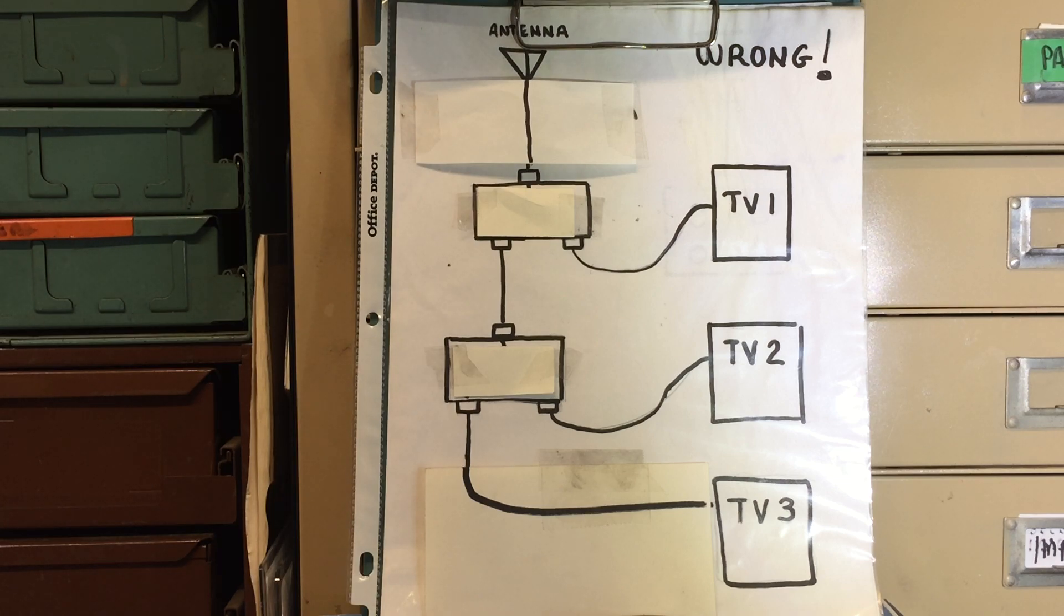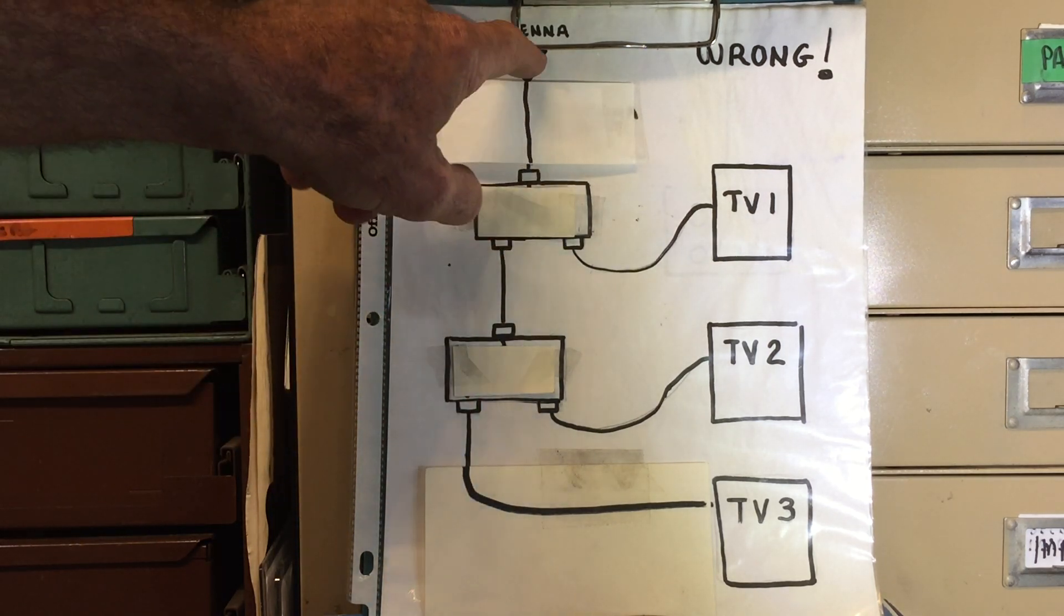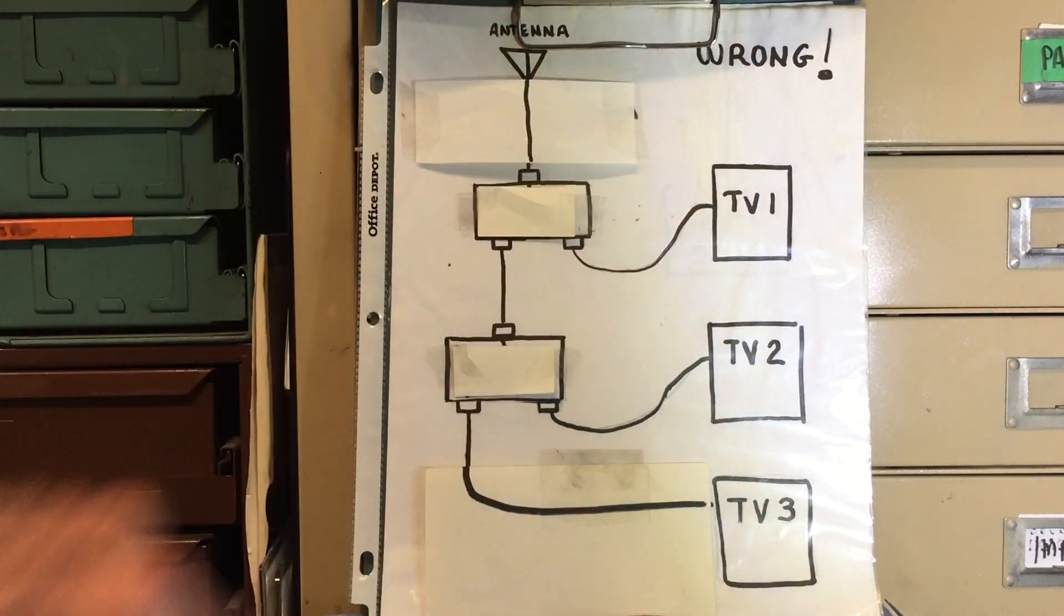Once I got there, I found out she already had an antenna on the roof, so all I had to really do was wire it up to the three TVs. I figured it'd be a walk in the park and just went ahead and put a couple splitters in the line like this, thinking I'd have the signal coming from the antenna to each TV in this manner.